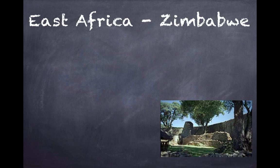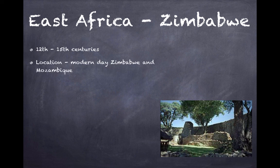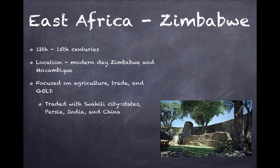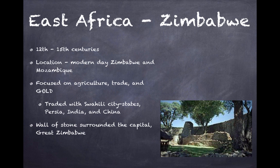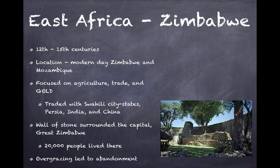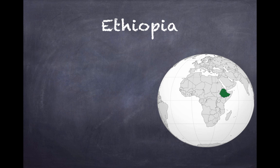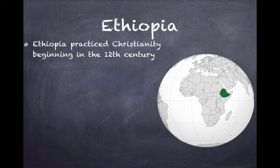Jumping over to East Africa, we have Zimbabwe, from the 12th to the 15th centuries. Located in modern-day Zimbabwe and Mozambique, it was focused on agriculture, trade, and gold. They traded with Swahili city-states, Persia, India, and China. A wall of stone surrounded the capital of Great Zimbabwe — pictured here — and 20,000 people lived there. However, over time, overgrazing by animals led to the city's abandonment.